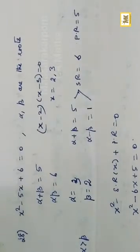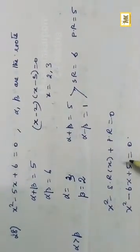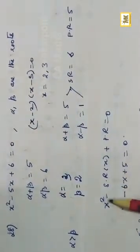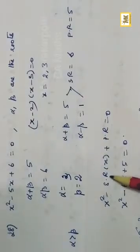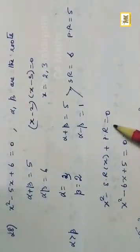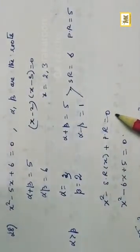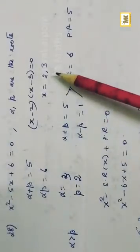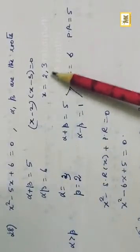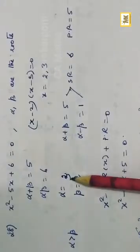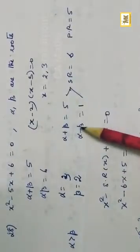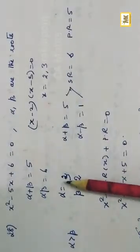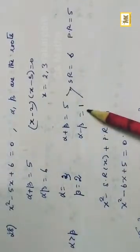The general form of a quadratic equation is x² - (sum of roots)x + (product of roots) = 0. Alpha+beta = 5 and alpha-beta = 3-2 = 1.